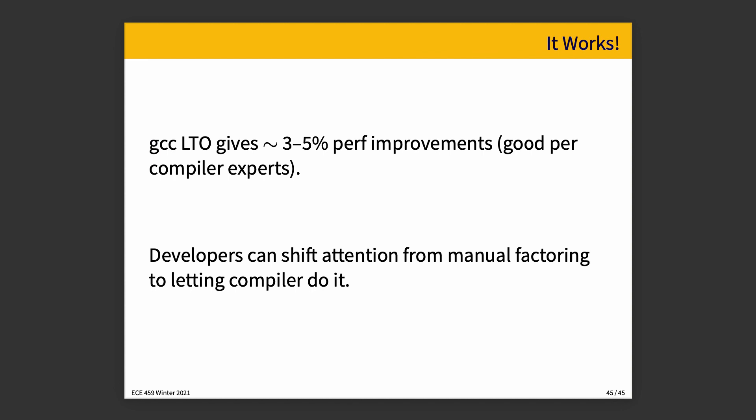According to some data, GCC link time optimization gives about 3% to 5% improvement in performance, which compiler experts consider to be good. It's not world-changing, but 5% performance for what is basically free — or at the cost of a little more compile time — is worth taking. The other nice thing is it allows developers to shift their attention from doing manual refactoring to having the compiler do it. If you do manual transformations, there is more chance of introducing a bug, whereas letting the compiler do it gives you higher confidence that it is done correctly.